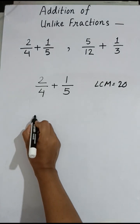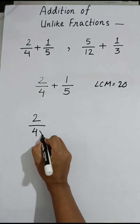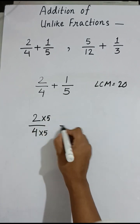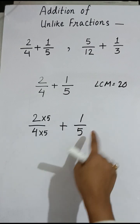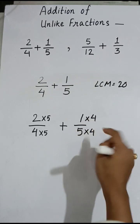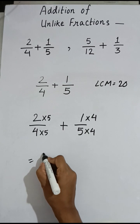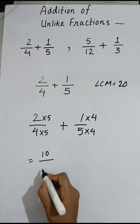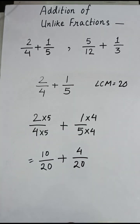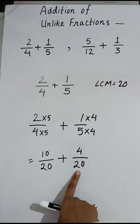Now we have to change the denominator of 2/4 into 20. For that, we multiply the denominator by 5, and the numerator also by the same number 5. For 1/5, we multiply the denominator by 4 and the numerator also by 4. So 2 × 5 = 10 and 4 × 5 = 20, plus 1 × 4 = 4 over 20. These two have now become like fractions because the denominators are the same.